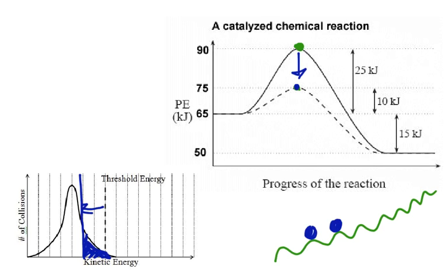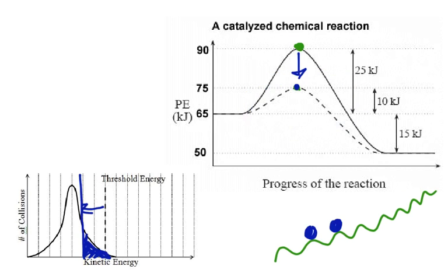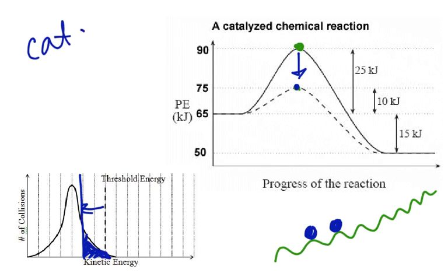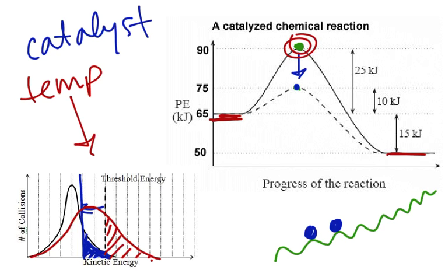So, a catalyst lowers the activation energy, it lowers that little graph, and what it does is it moves the threshold energy to the left. So the catalyst has two effects — it changes the potential energy diagram and it changes the kinetic energy diagram. Temperature, on the other hand, does nothing to the potential energy diagram. The energy of the reactants, the energy of the products, the energy of the transition state — those are all the same whether it's hot or cold. But for the kinetic energy diagram, increased temperature shifts the curve to the right, and that's why more particles are able to react. So temperature affects the kinetic energy diagram but does not affect the potential energy diagram. A catalyst changes the threshold energy and lowers the activation energy, so it changes both graphs. And that's what you're supposed to know about kinetic and potential energy diagrams.